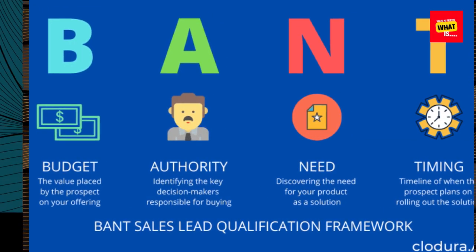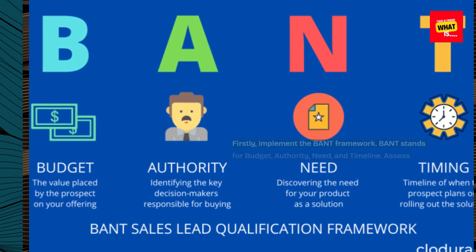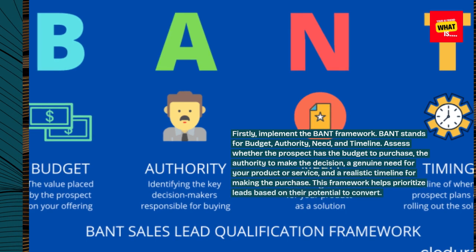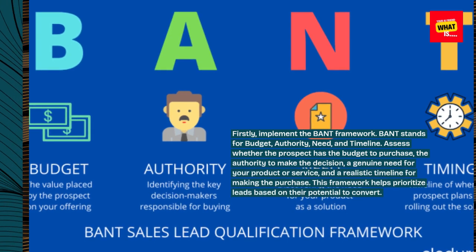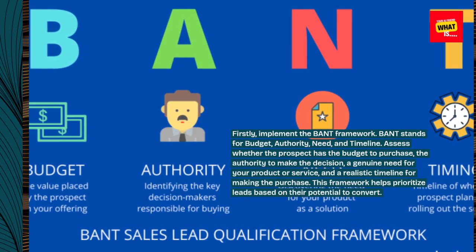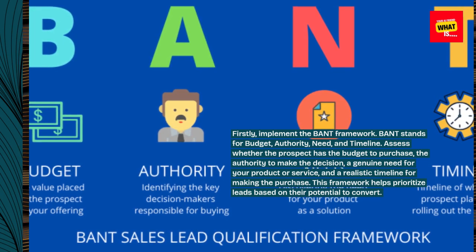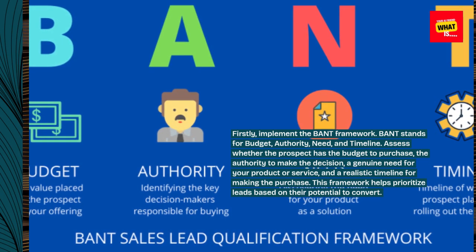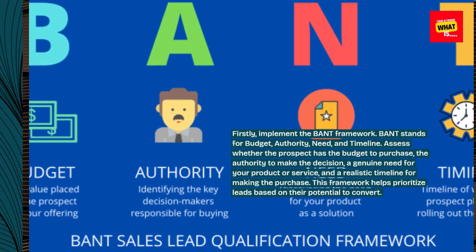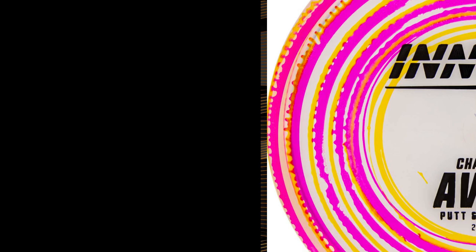Firstly, implement the BANT framework. BANT stands for budget, authority, need, and timeline. Assess whether the prospect has the budget to purchase, the authority to make the decision, a genuine need for your product or service, and a realistic timeline for making the purchase. This framework helps prioritize leads based on their potential to convert.